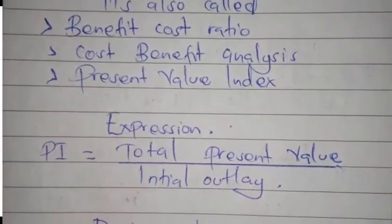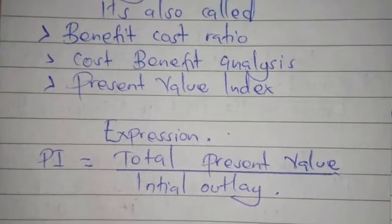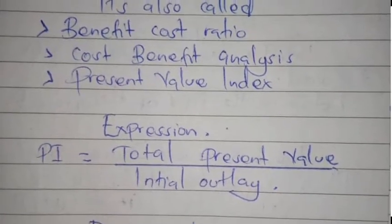The expression or formula for probability index is total present value divided by initial outlay.